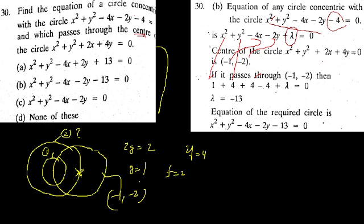The center of the second circle is minus 1, minus 2. Substituting into x squared plus y squared minus 4x minus 2y plus lambda equal to 0: minus 4 into minus 1 plus 4, minus 2 into minus 2 plus 4, gives lambda equal to minus 13. So the answer is x squared plus y squared minus 4x minus 2y minus 13 equal to 0.